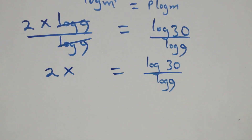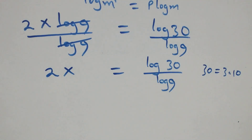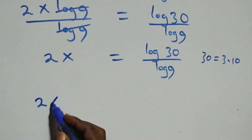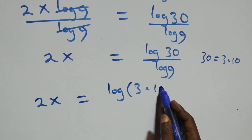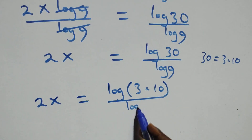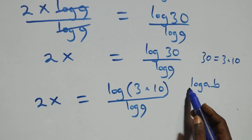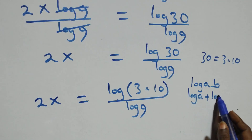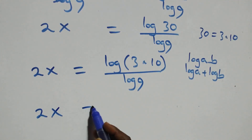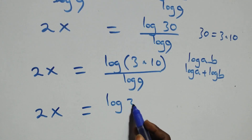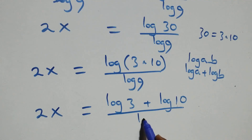From here, we can write 30 as 3 times 10, which implies 2x equals log(3 times 10) over log 9. This follows the rule log(a times b) equals log a plus log b, so this becomes 2x equals (log 3 plus log 10) over log 9.